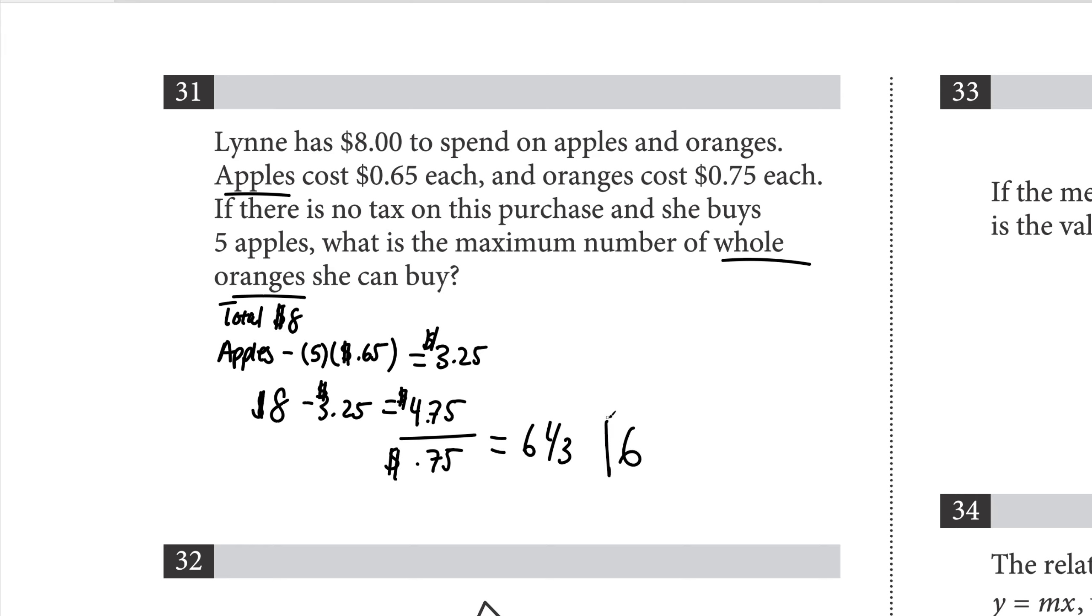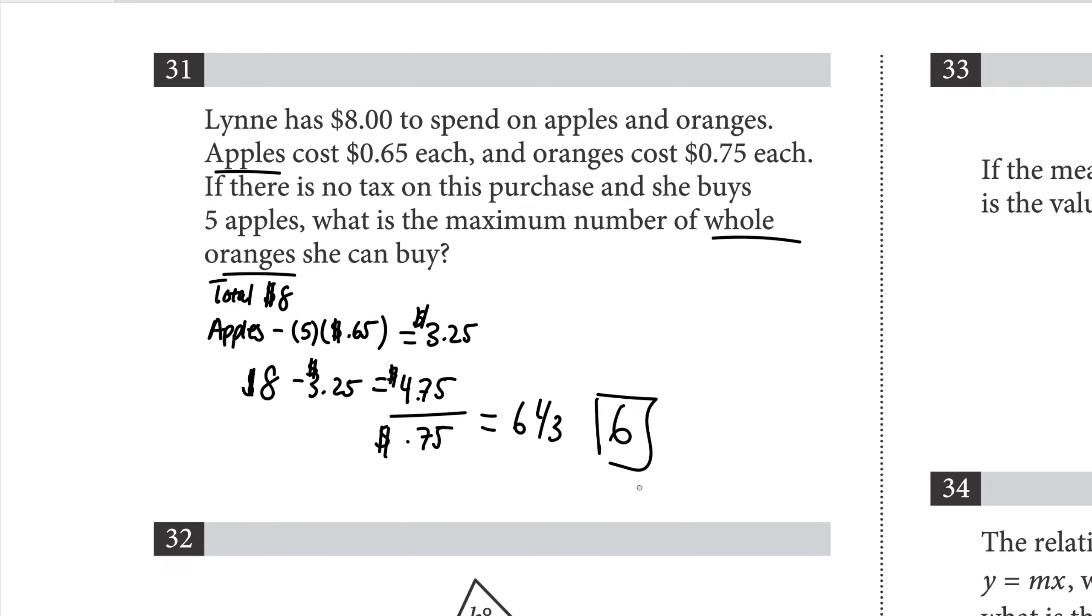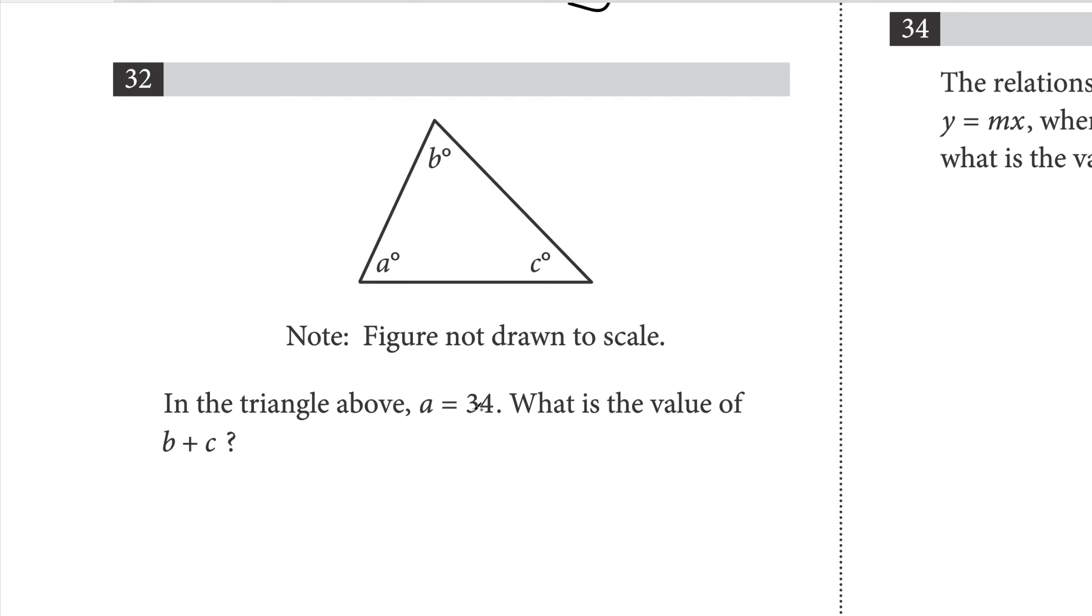In the triangle above, a equals 34. What is the value of b plus c? Recall that in a triangle all the angles add up to 180 degrees. If a is 34, then it's going to be 180 minus 34 degrees, which would be 146 degrees. Then b and c would have to add up to 146.